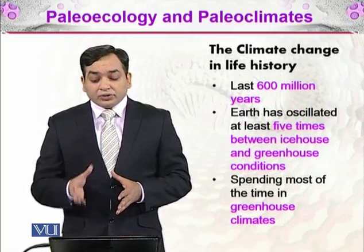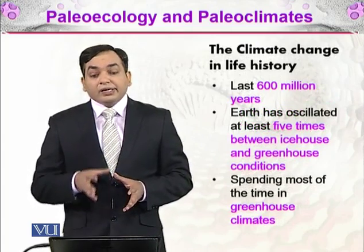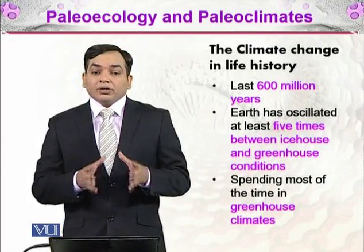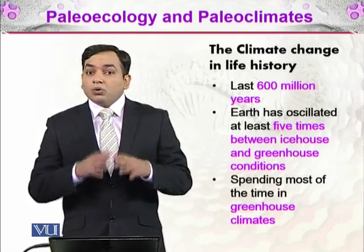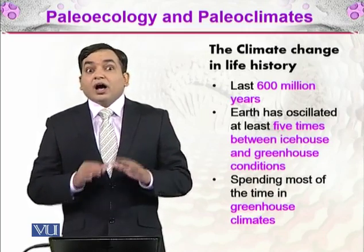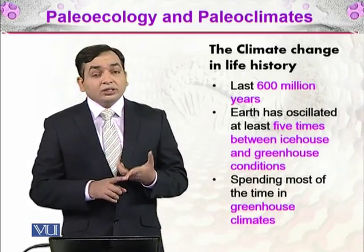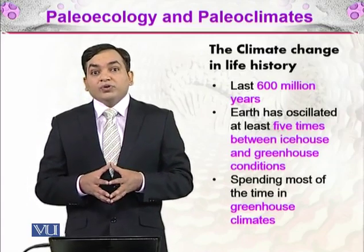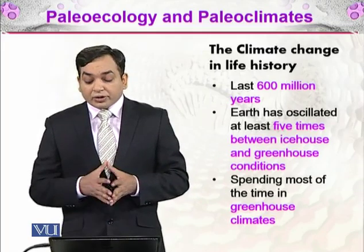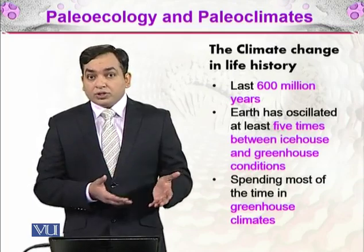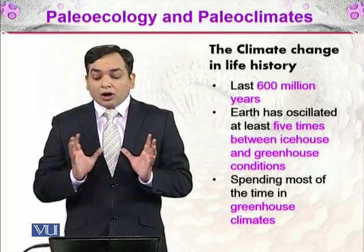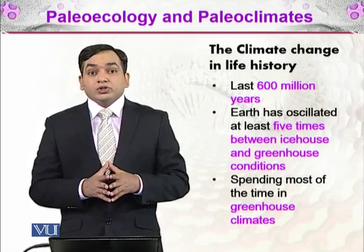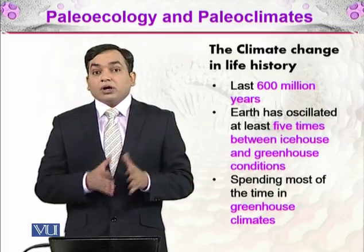For the last 600 million years, Earth has oscillated at least five times between icehouse and greenhouse conditions. Icehouse means the Earth experienced ice ages — the whole Earth was prevalently covered with ice sheets, glaciation started, temperatures dropped, and organisms had to cope with the decreasing temperature. Greenhouse conditions are those in which the temperature is increasing, and Earth has been oscillating between these decreasing and increasing average temperatures for the last 600 million years.